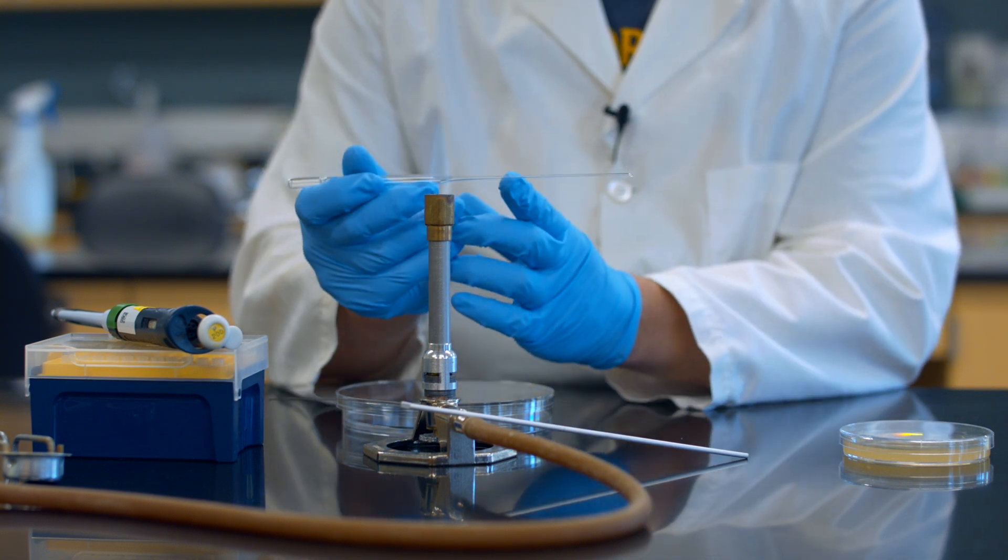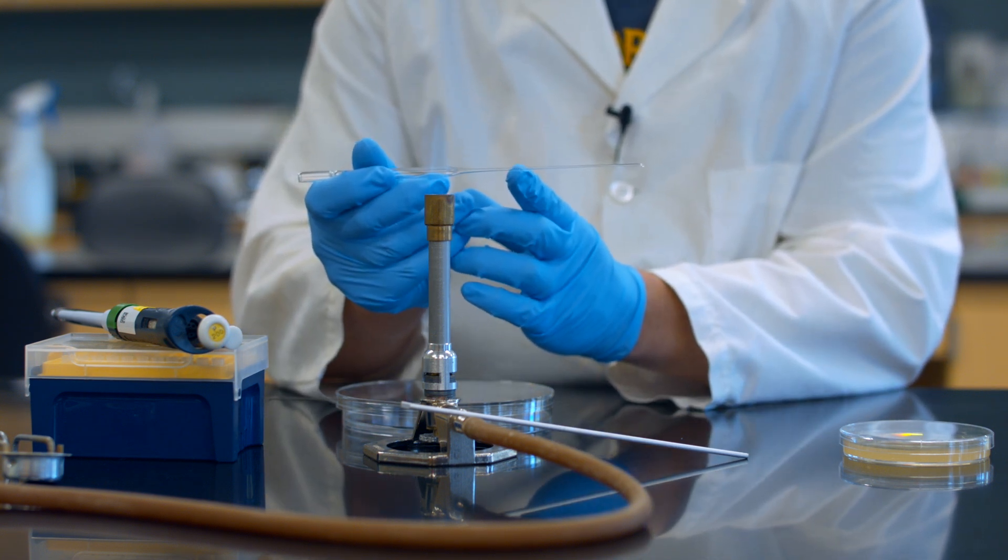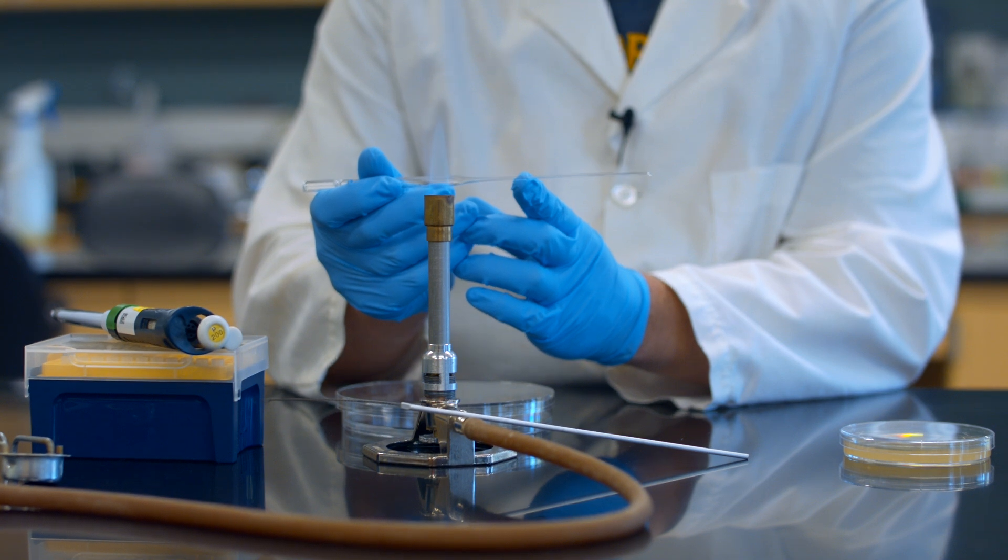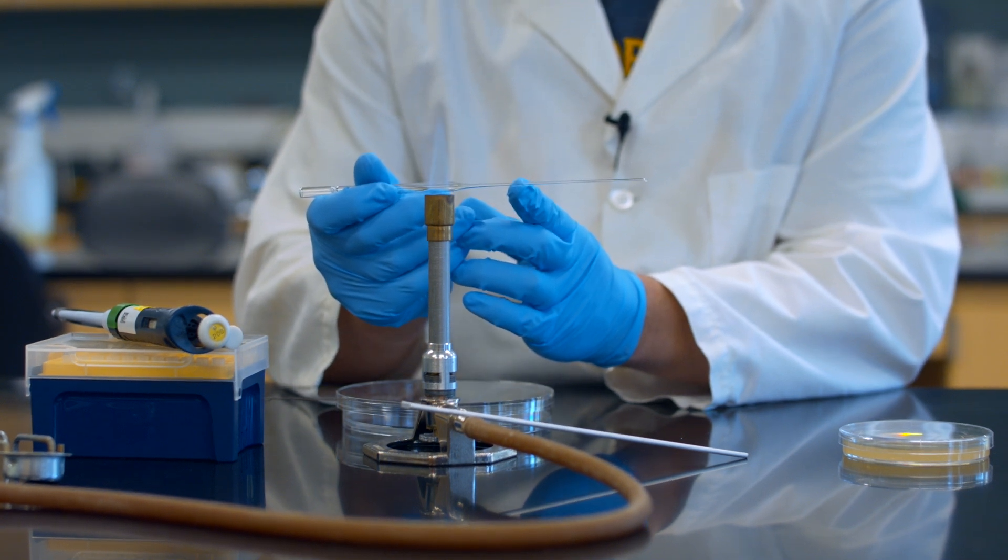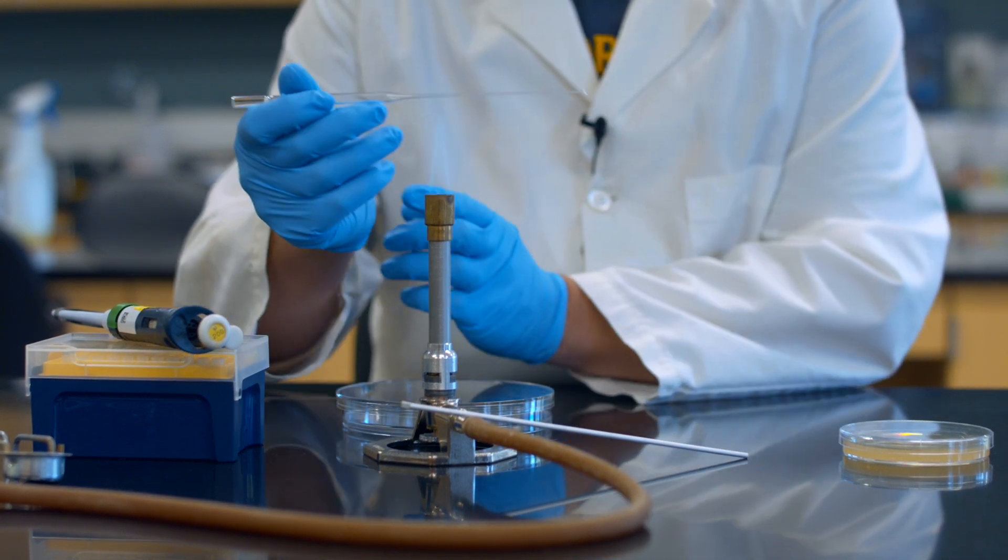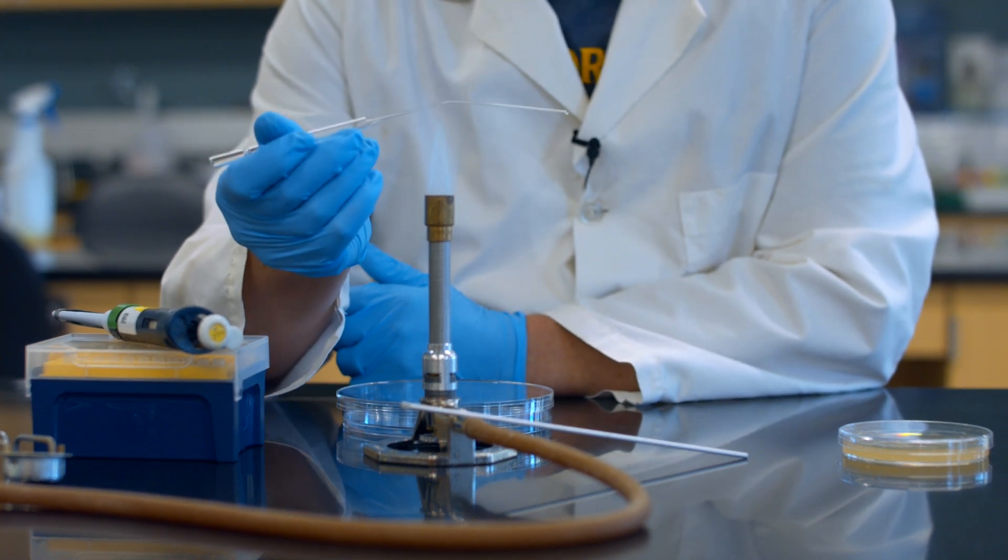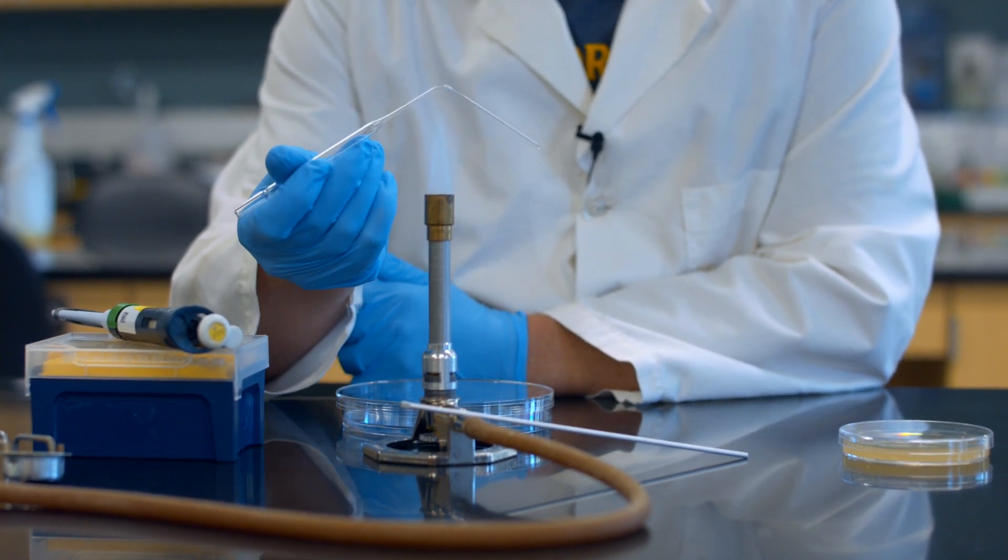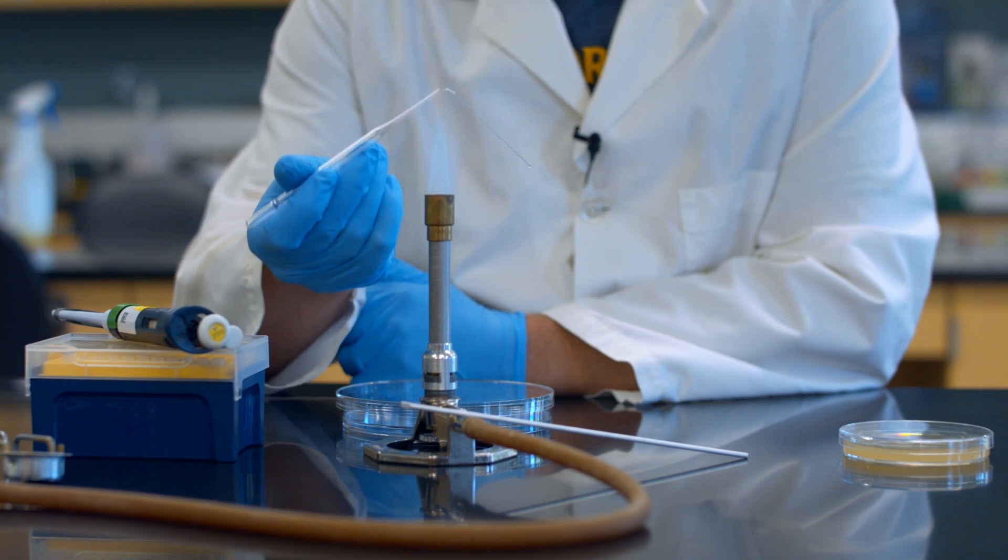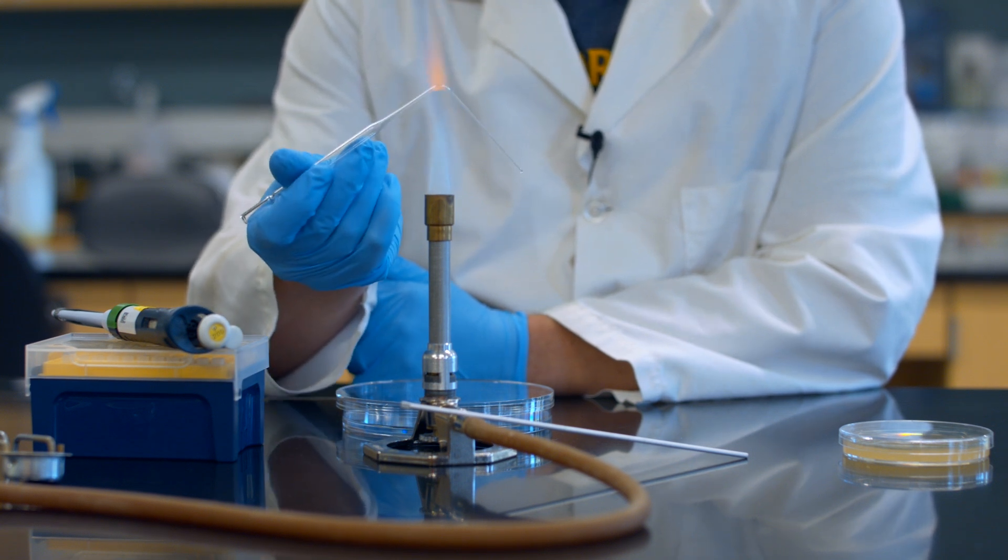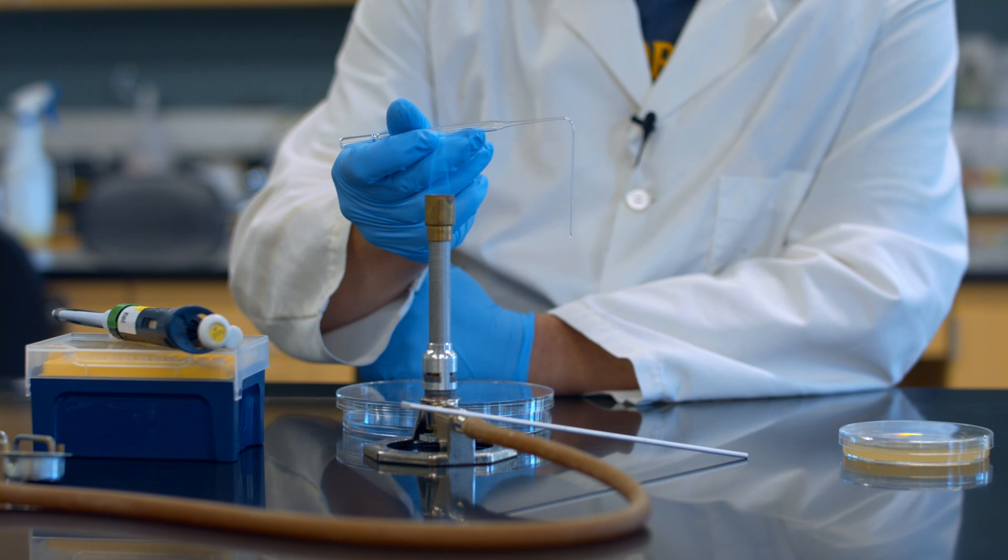And now I'm going to put a bend right about here, about two, two and a half inches down the length of this glass Pasteur pipette. Because it's so thin and this flame is so hot, you've got to be real careful. I want to go for about a 90 degree bend, just like that.